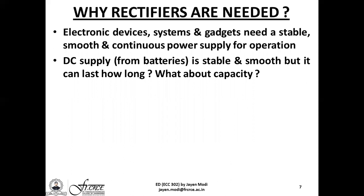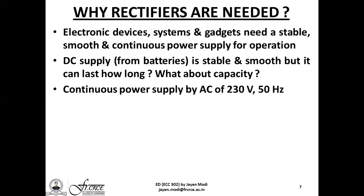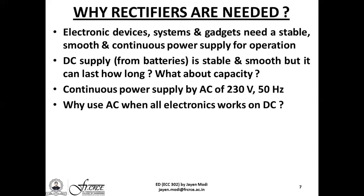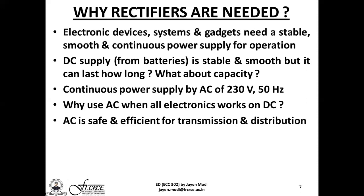An alternate solution is to use the continuous power supply of 230 volts AC 50 Hz available at our homes. Industries use 440 volts AC 50 Hz, typically three-phase. So AC takes care of the need for continuity while DC takes care of stability and smoothness. From the point of view of safety, efficiency, and economics, AC is suitable for transmission and distribution compared to DC.